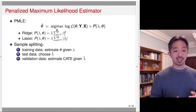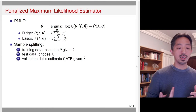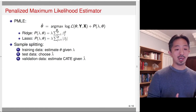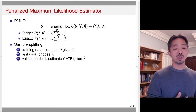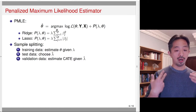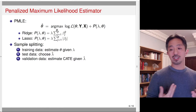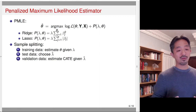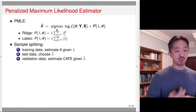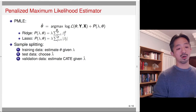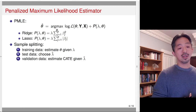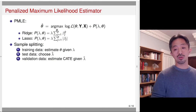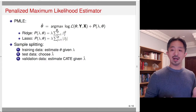Finally, you have validation data to estimate the CATE given the chosen lambda. You use this validation data to re-estimate the model parameters and estimate the conditional average treatment effect. This requires splitting the data into three portions: one to train the model, one to test the model, and one to validate the model. So it's data intensive in order to avoid overfitting.